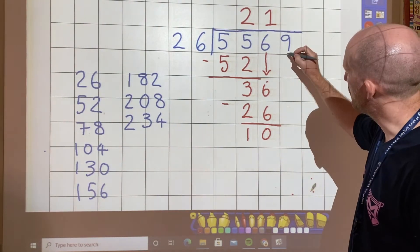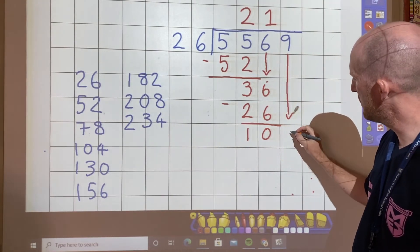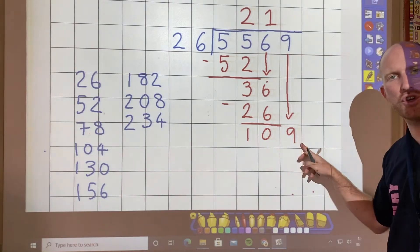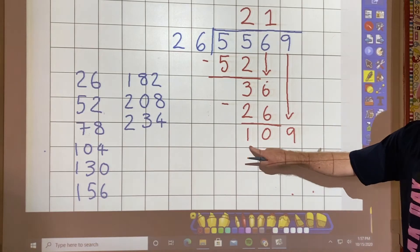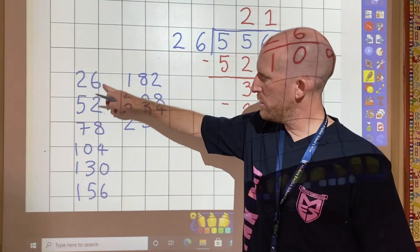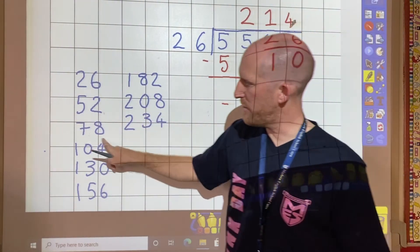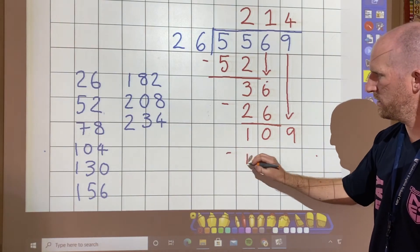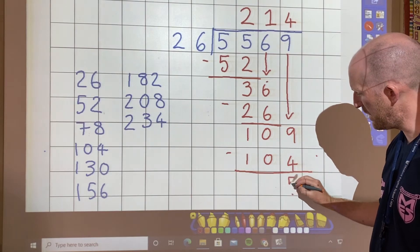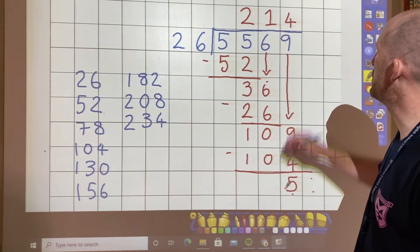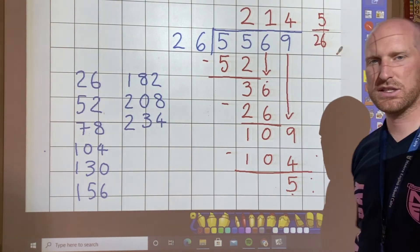And then finally, I need to bring this nine all the way down to the remainder. And I have 109 now. How many 26s in 109? One, two, three, four. And I take away four 26s. And that leaves me with a remainder of five. And then you can choose to present the remainder however you want. I've done the answer as a fraction.